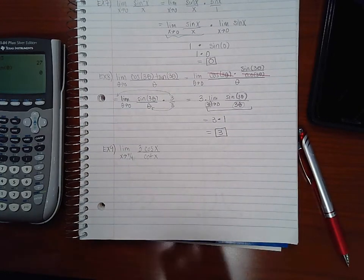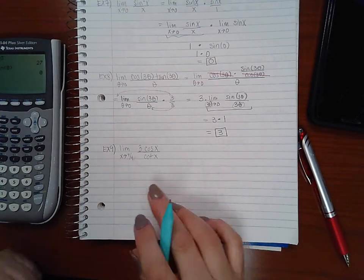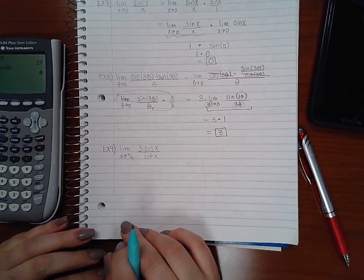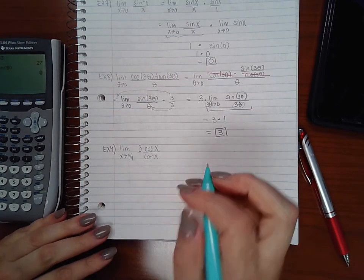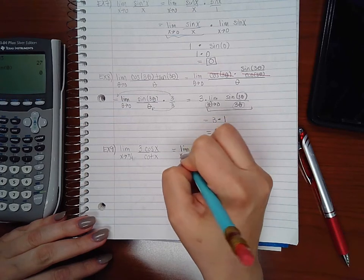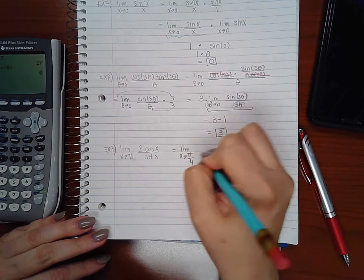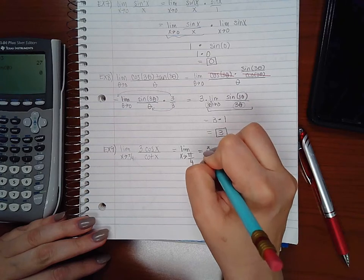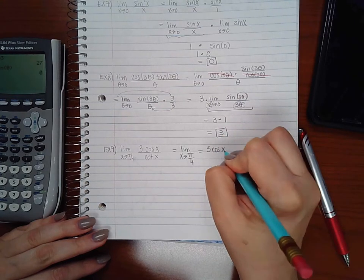Last example, very similar. We had one for cosine but we don't have anything for cotangent, so let's see if we can manipulate this a little bit. I'm going to put the 3 cosine x.